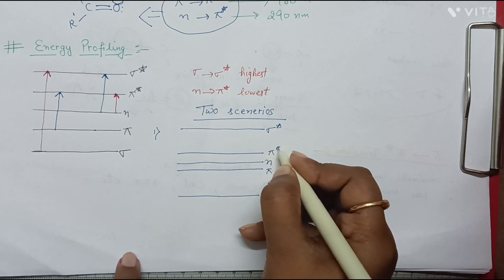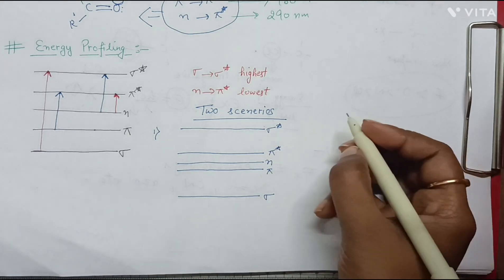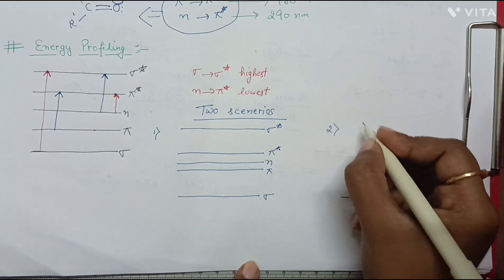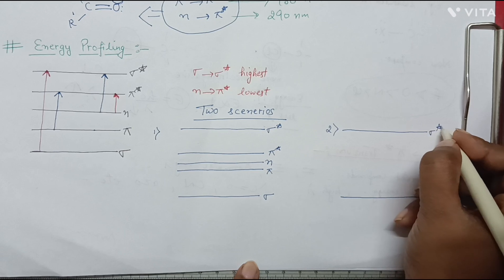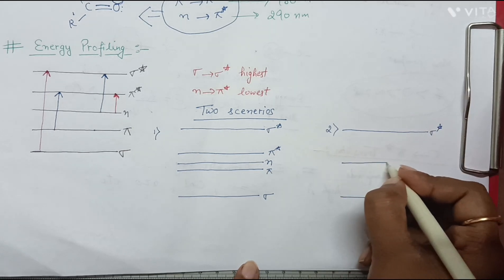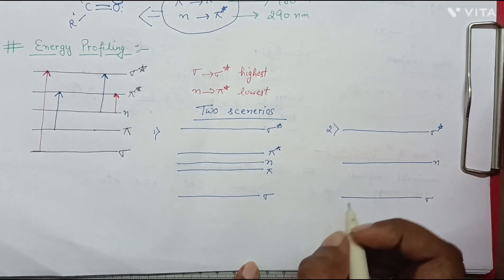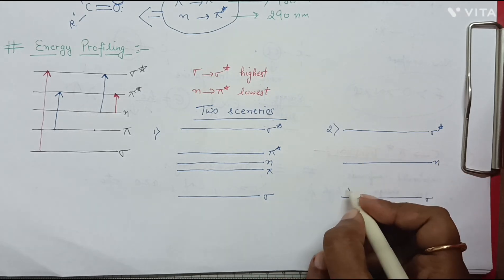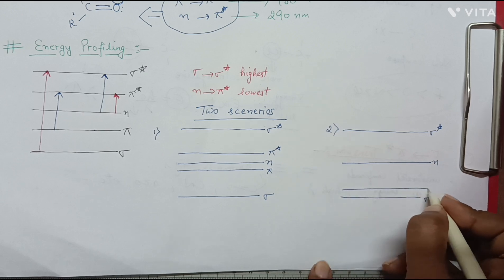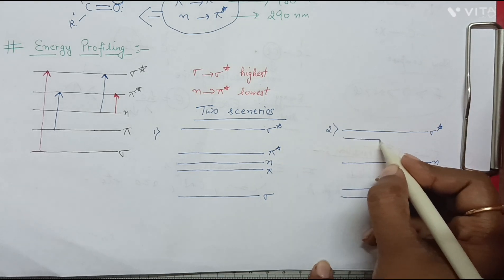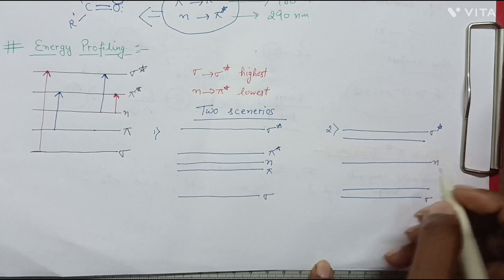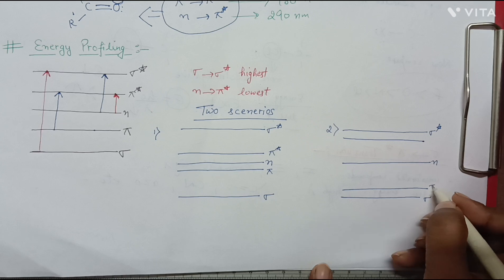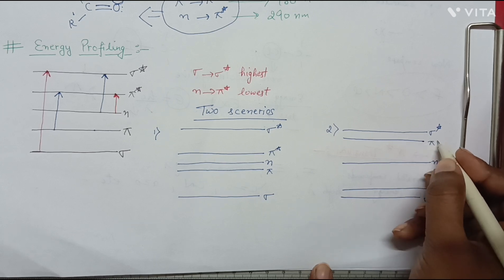In the second scenario, suppose we again have sigma at the bottom and sigma star at the top, with non-bonding in between. But now pi and pi star lie far away from the non-bonding level — pi is lower and pi star is higher, closer to sigma star.